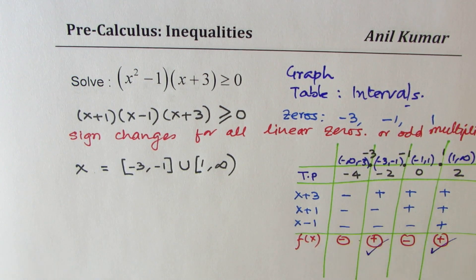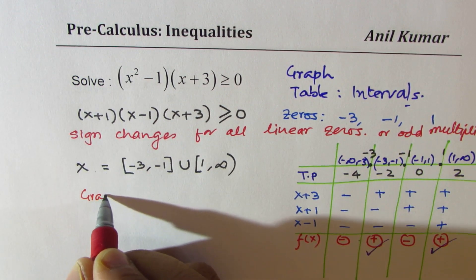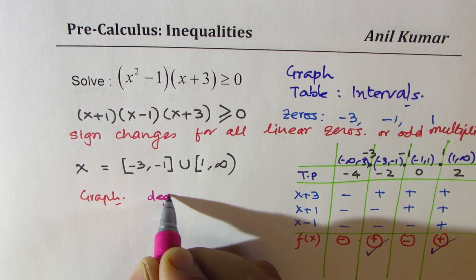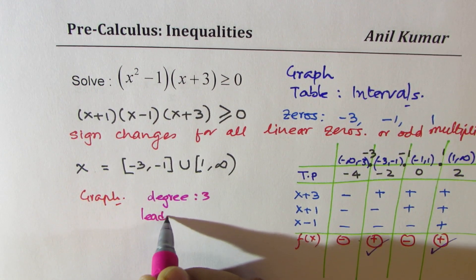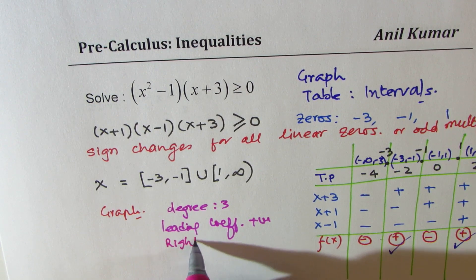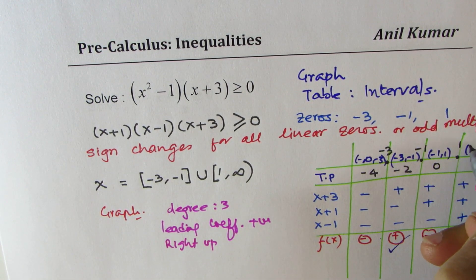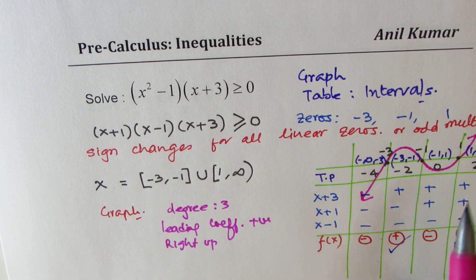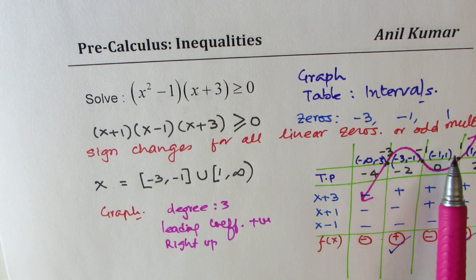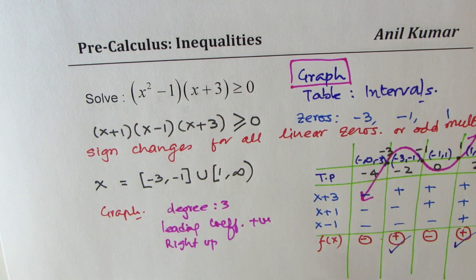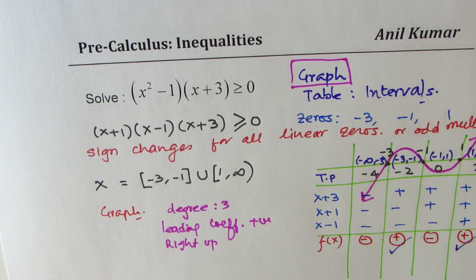Now let me show the graphical approach. Since this is a degree-3 polynomial with a positive leading coefficient, the graph goes right-up. Passing through the three linear zeros, the graph clearly shows it's positive in the two intervals. Solving with a graph is very simple — just sketch it. For multiple choice questions on your test, that's the best approach for any polynomial inequality.